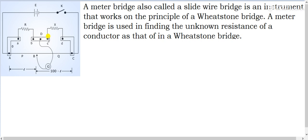The unknown resistance X is placed on the right side between C and D, and the known resistance R is placed on the left side between A and B. The main application of the meter bridge is to find the value of the unknown resistance.